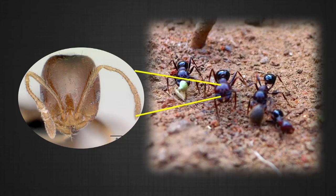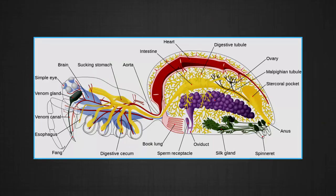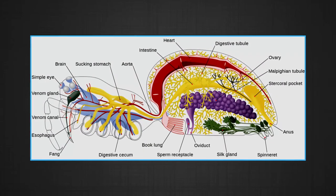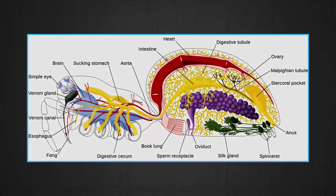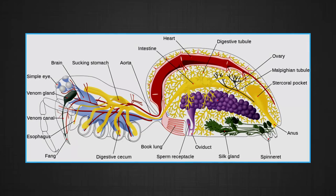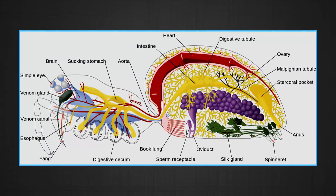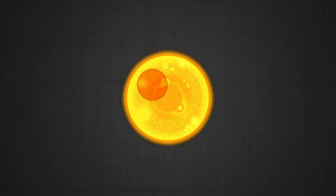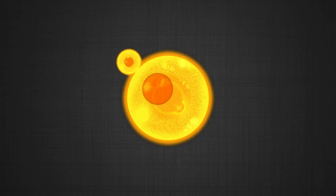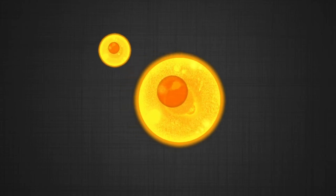The organisms were described on the basis of observed structural features, both external and internal. The detailed description of life forms on the basis of appearance of external and internal features brought out the concept of diversity. It is the cell theory that emphasized the unity underlying this diversity of forms, that is, the cellular organization of all life forms.